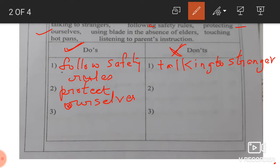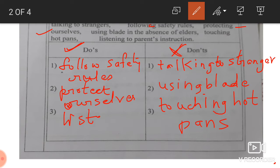Next, use blade in the absence of elder. No, please, no. Using... I will write in short here. I cannot, because I don't have place. You write better. Using blade, no, it will be don't. Touching the hot pans. No. Touching hot pans. No. Listening to parents instruction. Yes. Listen to parents. Yes.